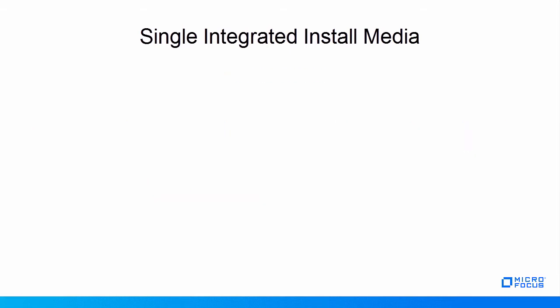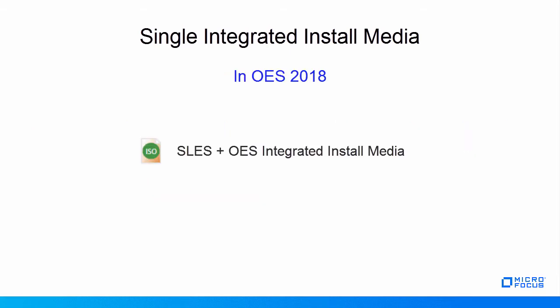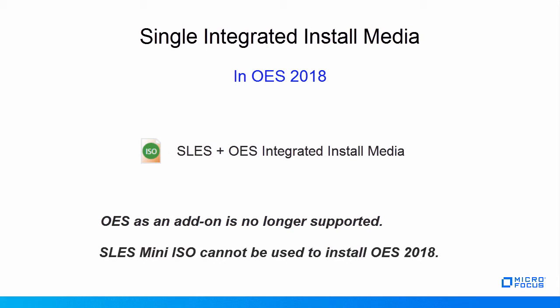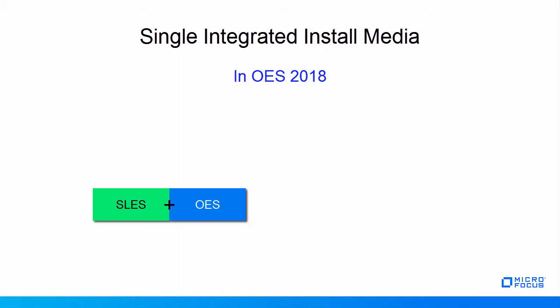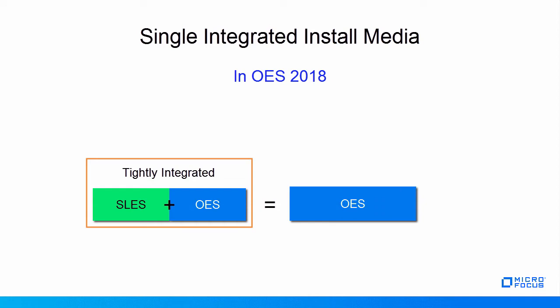Moving on to OES 2018, only one integrated install media is available. OES as an add-on is no longer supported, and therefore SLES mini ISO cannot be used to install OES 2018. SLES and OES is tightly integrated into a single install media, which simplifies the OES installation. The single install media contains only OES product information.